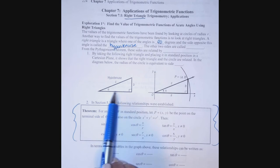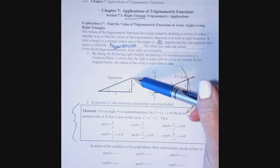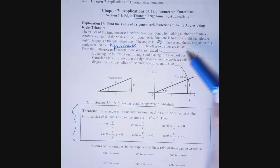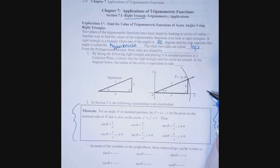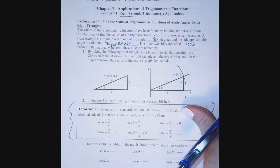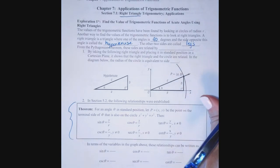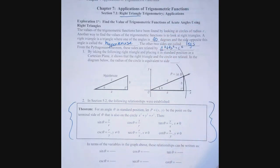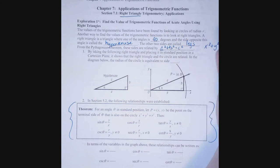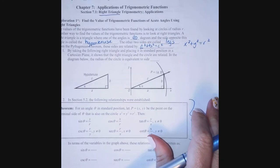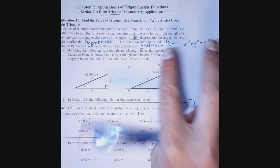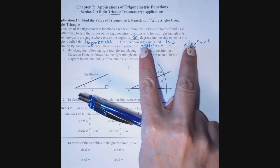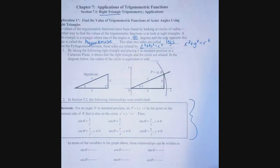The other two sides are called legs. So we have a hypotenuse and two legs in a right triangle. We use the Pythagorean theorem, A squared plus B squared equals C squared, which we have been using in a distance formula form: X squared plus Y squared equals R squared, where R is the hypotenuse. X and Y correspond to A and B, the legs of the triangle.